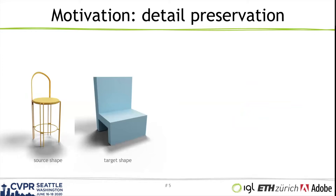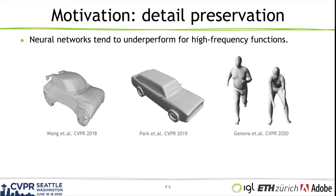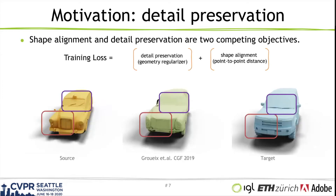First, let me convince you that this is actually not a trivial task with a pair of simpler chair models. We see significant distortions in the deformation result generated by the state-of-the-art method. The reason is neural networks are inherently limited in representing high frequency functions. Developing a neural representation for high frequency details in 3D data is a challenging task of its own. Secondly, shape alignment and feature preservation are in fact two competing, if not conflicting, objectives. As the example here shows, as we naively force the result to match the target and at the same time preserve the features of the source shape, the resulting geometry can become a somewhat smudged version of the two.